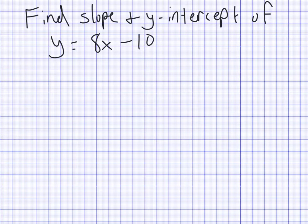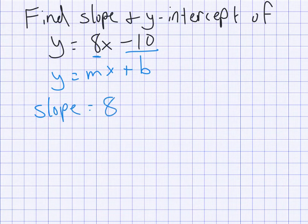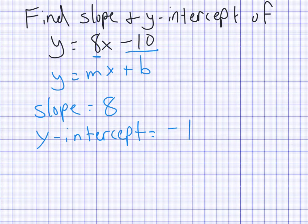A negative divided by a negative gives us a positive. Here's a really easy problem: find the slope and y-intercept of an equation already in y equals mx plus b form. Anytime your equation is solved for y, it's automatically in y equals mx plus b. The m is always the number next to x, so our slope m equals 8. The b is the number without x, including its sign, so b equals negative 10. That means our slope is 8 and our y-intercept is negative 10.